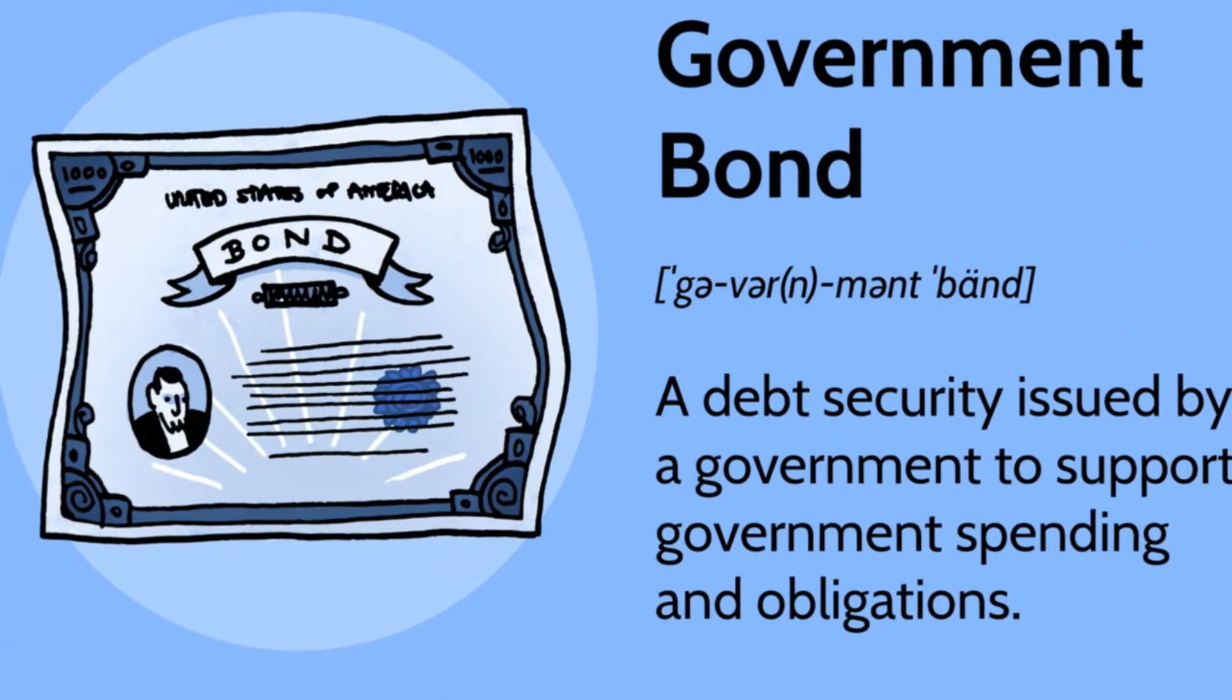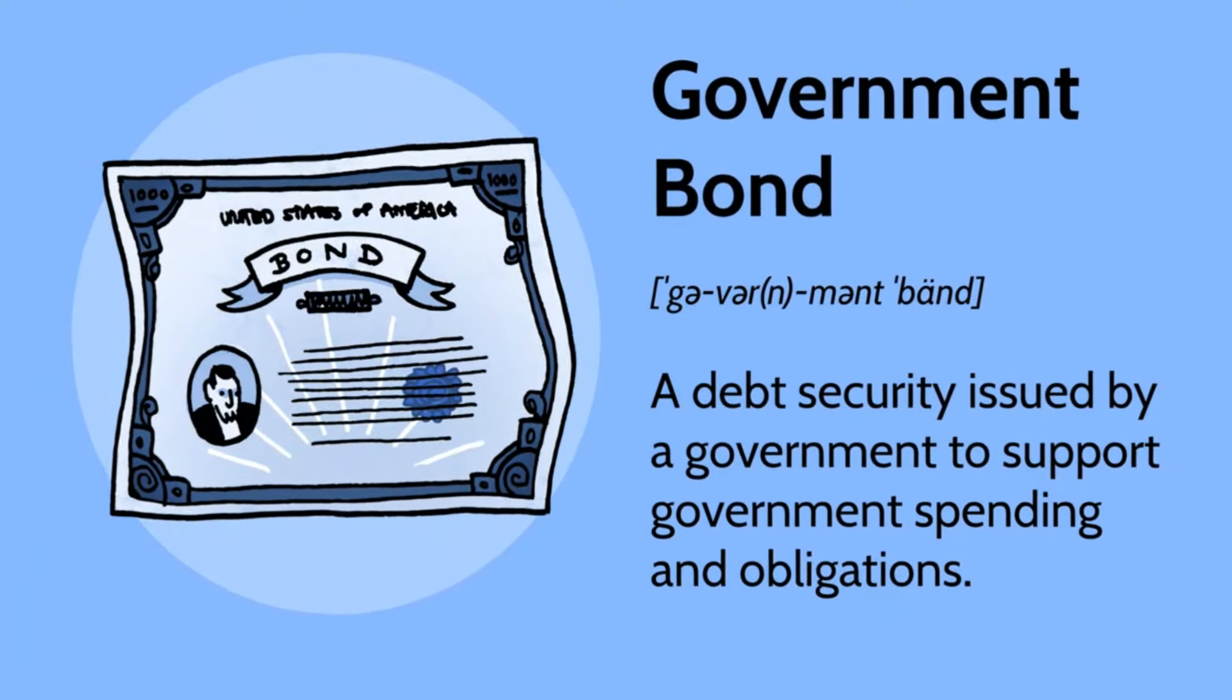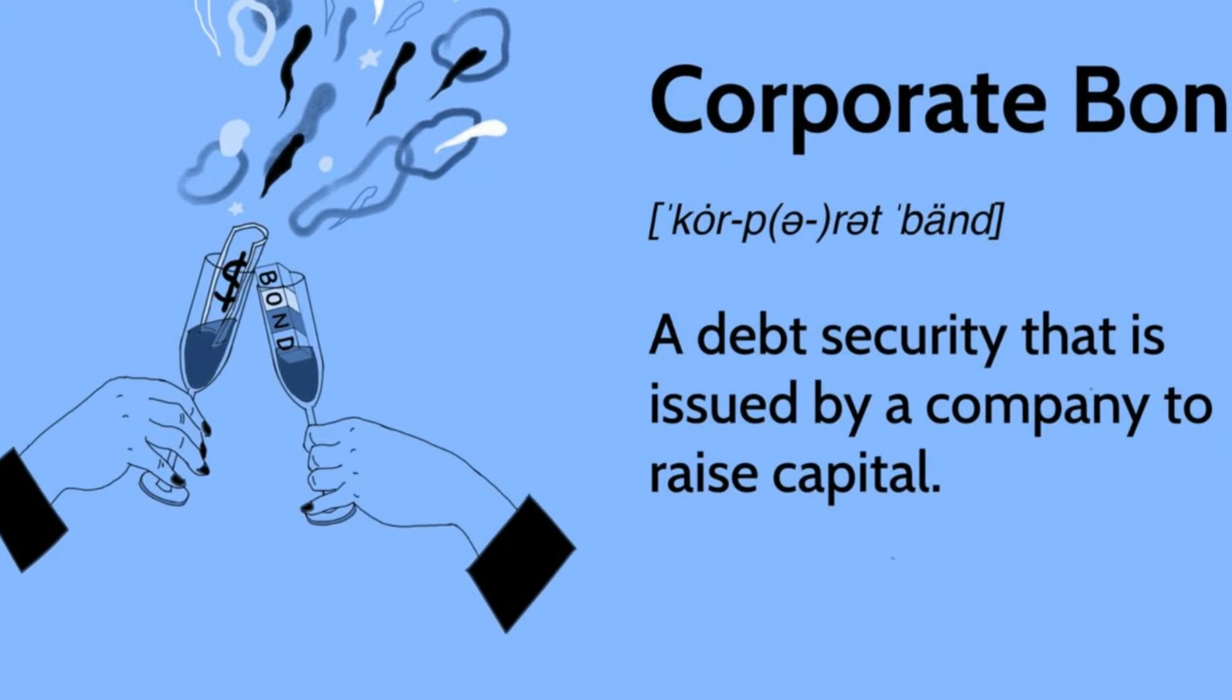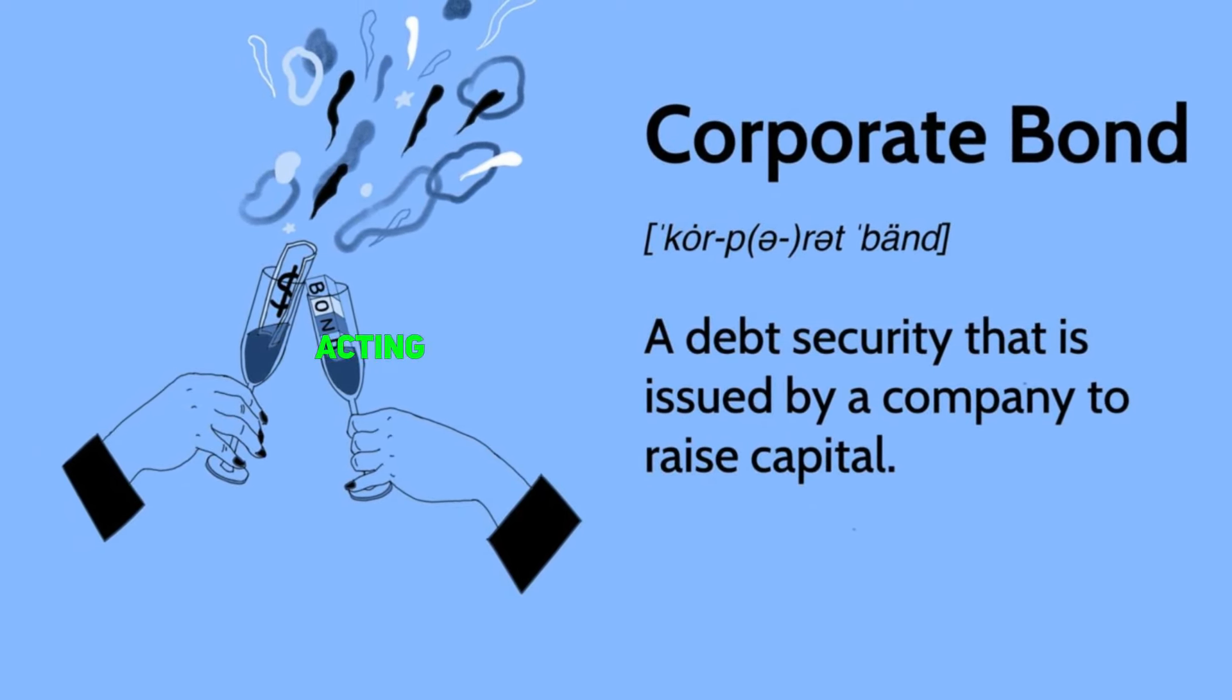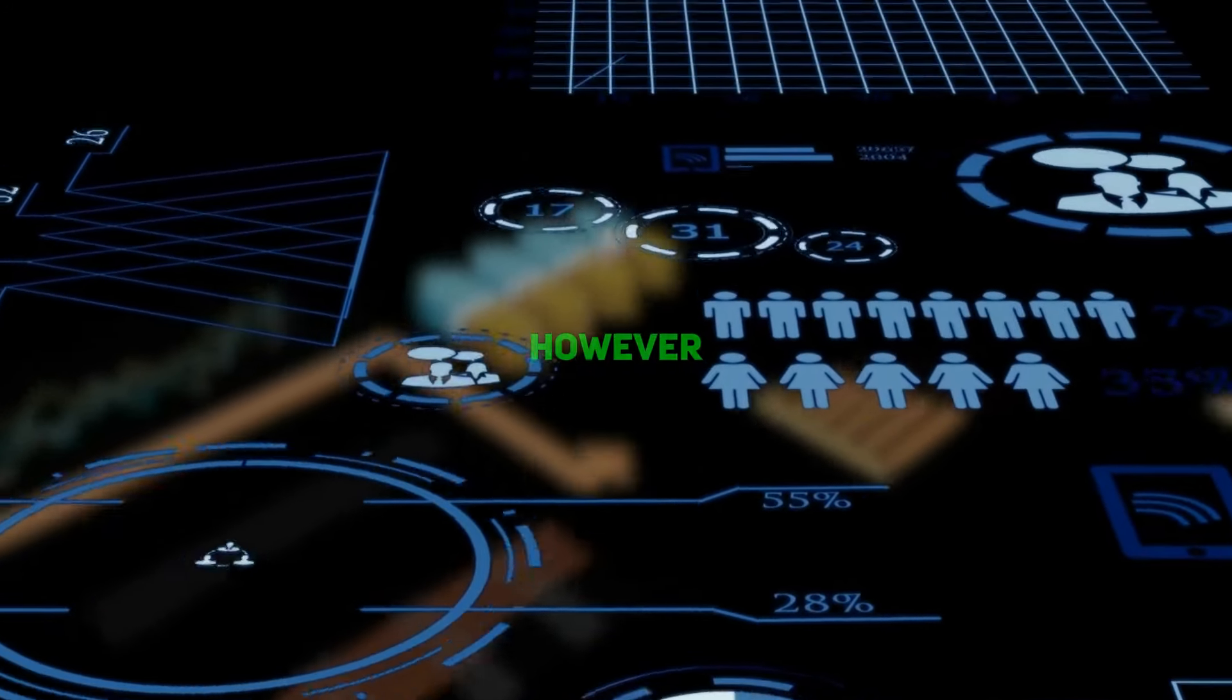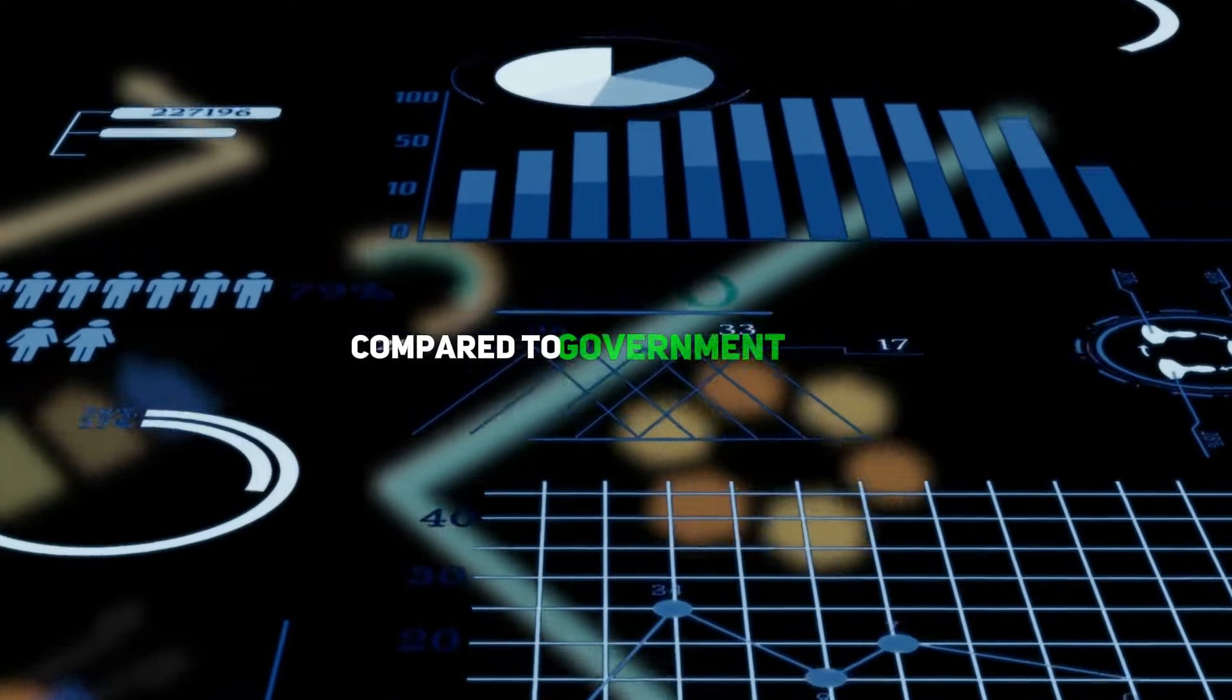Government bonds, for instance, are floated by national governments and are generally regarded as an extremely low-risk choice because it's very unlikely that a national government will default on its debt. On the other hand, we have corporate bonds sold to investors by corporations. As one might accurately guess, these bonds tend to offer higher yields, acting as an attractive proposition for those in search of increased income streams. However, higher yields come with higher risk, and therefore corporate bonds generally carry a greater risk compared to government bonds.